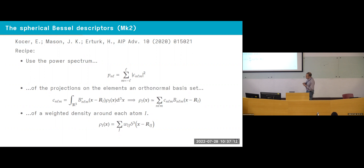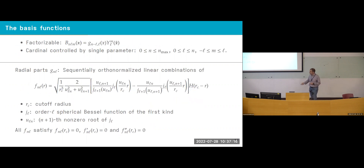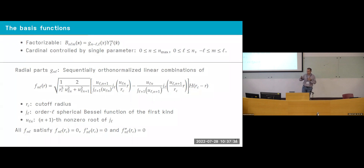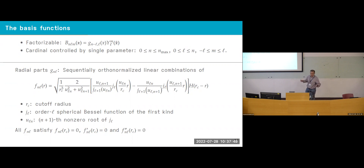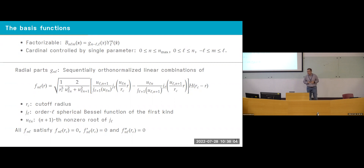There are several ways to do this post-processing. One of the main differences is which basis we choose. In our particular case, we use the so-called second-generation spherical Bessel descriptors. The basis functions are built as a product of a radial part and an angular part — the spherical harmonics — which always define a basis for any function on the sphere. Multiplying by a radial part allows us to parameterize every function, though we truncate the basis.